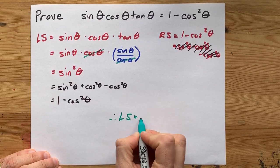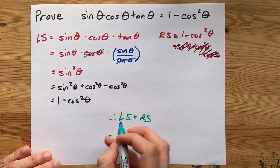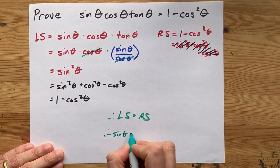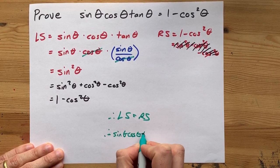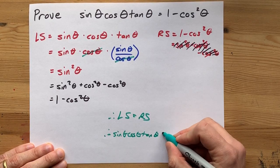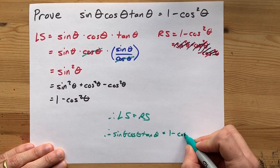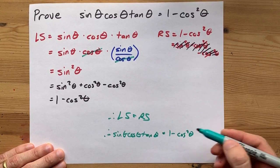Therefore, left side equals right side, and therefore also the sine of an angle times the cos of an angle times the tan of that same angle equals 1 minus the square of the cos of that angle.